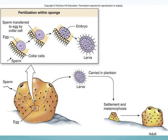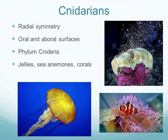Fertilization occurs within the sponge — a neighboring sponge's sperm is pulled in through the pores, fertilizes the egg, which becomes an embryo, then a larva. That larva is pushed out through the osculum into open water. When it finds suitable habitat it settles and metamorphoses into a small adult. If conditions are unfavorable, the larva may not settle and will instead search for a more suitable habitat.